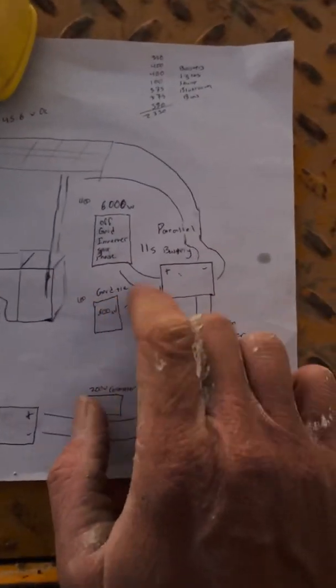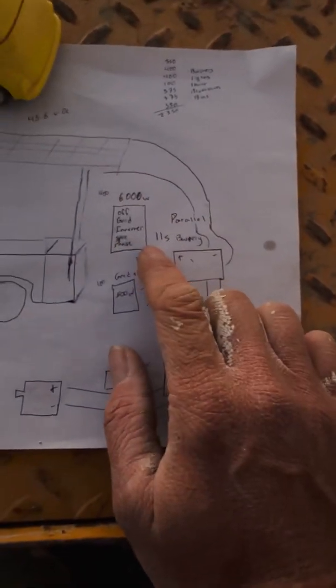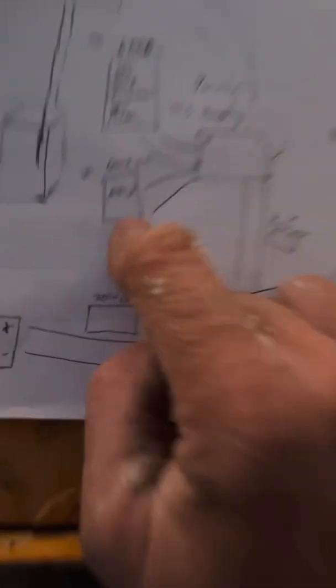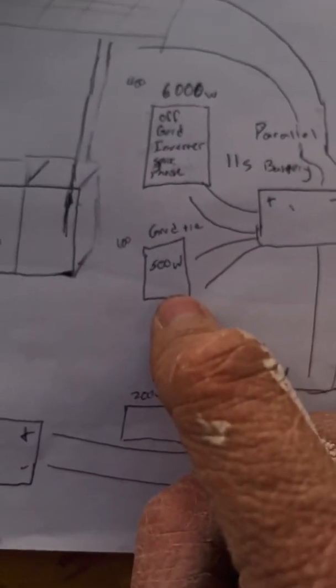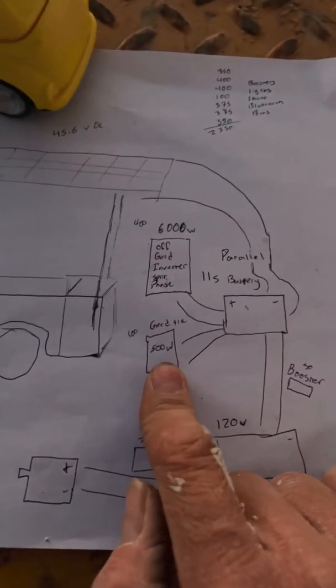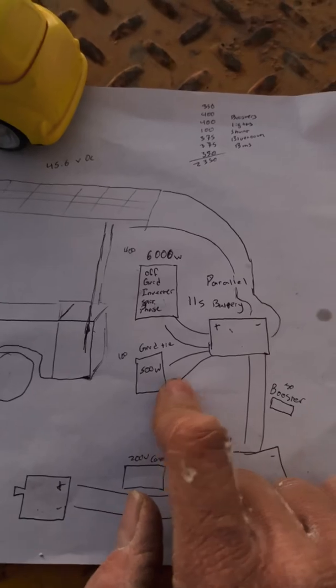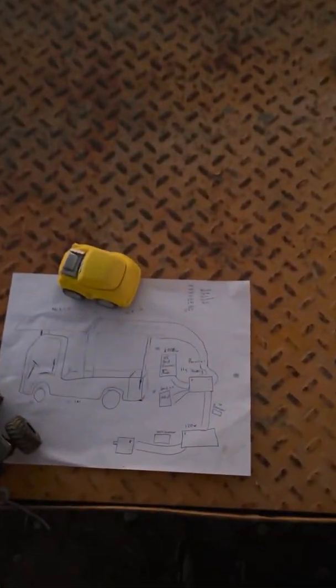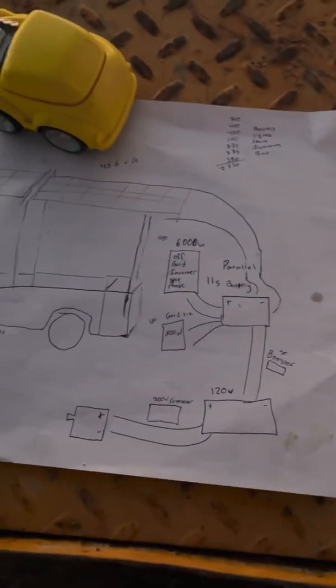But anyways, that's going to be the plan with this. We can eventually maybe go to a bigger inverter, but we're also going to have a small grid tie inverter that this can also be upgraded later on in the future. But it's going to be a 500 watt, which will basically allow the solar panels to push their power into the grid if we want to do that with this.